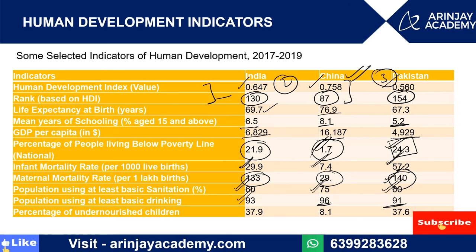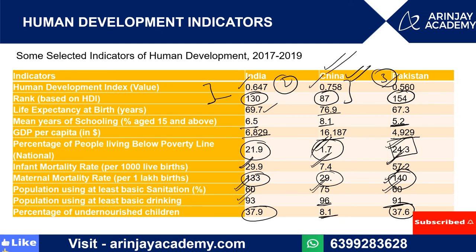The percentage of undernourished children: in China it is 8.1 percent, which is the lowest, while in India it is 37.9 percent and in Pakistan it is 37.6 percent — so India has slightly more undernourished children. Overall, by all these indicators, we can say that China has performed better in human development, and all the policies and plans implemented in China have worked better, giving China better growth compared to India and Pakistan.